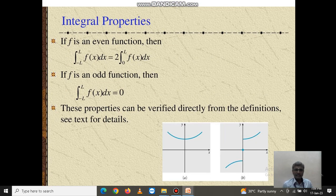Next, integral properties. If f is an even function, then the integral from minus l to l of f(x) dx equals 2 times the integral from 0 to l of f(x) dx. If f is an odd function, then the integral from minus l to l of f(x) dx equals 0.